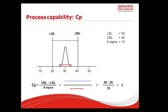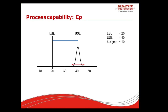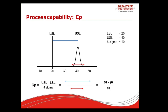A CP of 2 means we have two times more allowed variation than the variation we are currently using in the process. If we look at another process with the same calculation — USL minus LSL divided by 6 sigma = 40 minus 20 divided by 10 = 2 — the CP is also 2. This is exactly the same, because CP only looks at the allowed tolerance divided by the process variation. It does not take into account whether the process is properly centered, so we can have a CP of 2 and still produce 50% scrap.